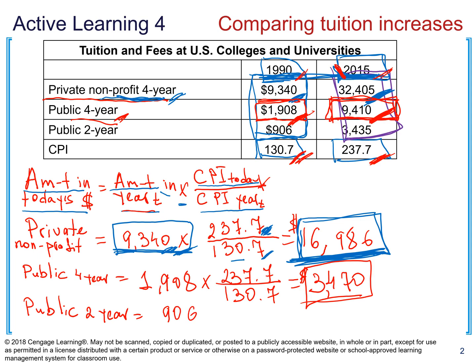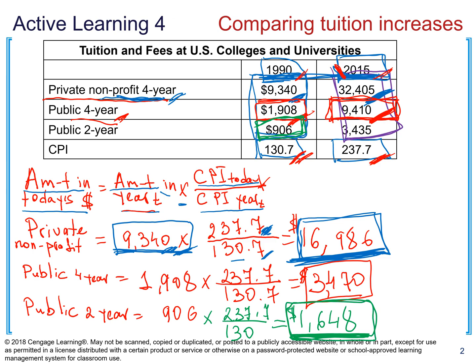The last one is public two-year college. The amount in year t was $906, taken from the graph. We transfer it into 2015 value: $906 multiplied by the ratio 237.7 divided by 130.7, which equals $1,648. If the price of education had only kept pace with inflation, we should have paid $1,648 for tuition at a two-year college in 2015. But what were students actually paying? $3,435. So once again, students in 2015 are paying more for education.